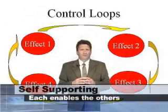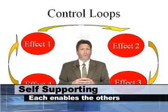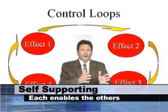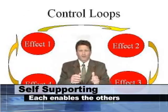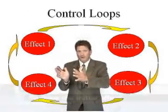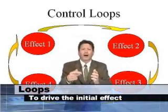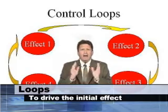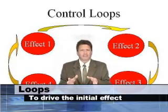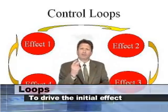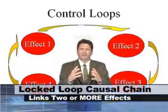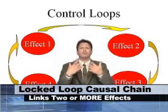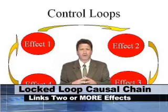A control loop is a chain of effects that supports their own existence. One effect creates another effect, which drives another effect, which loops back, driving the initial effect. Every chronic disease is a locked loop causal chain linking two or more biological dysfunctions into a self-reinforcing pattern.